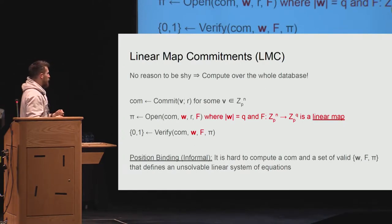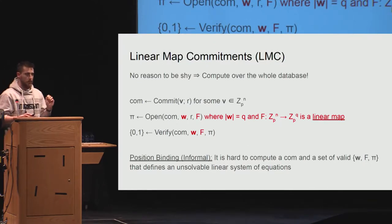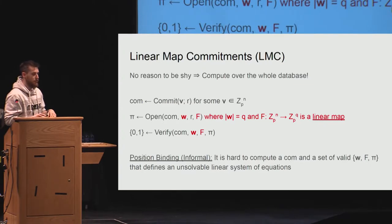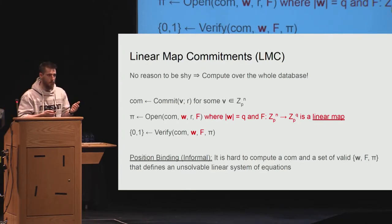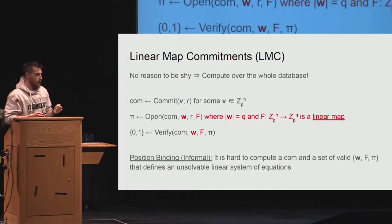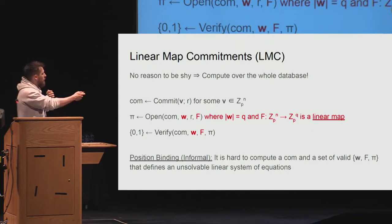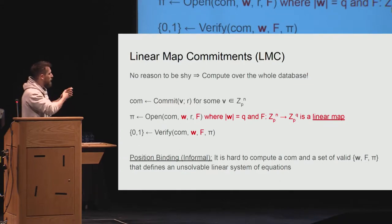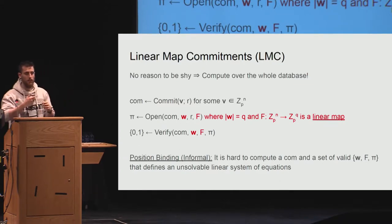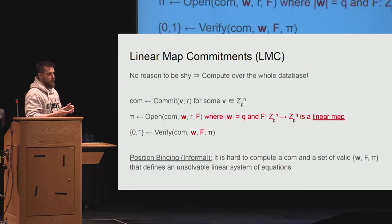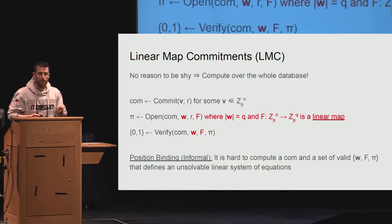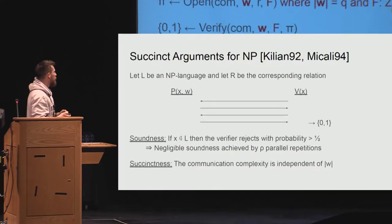The position binding for linear map commitments gets a bit tricky because you have several relations. Intuitively, if you think of the database as a set of unknowns, then each opening together with the proof defines a set of linear equations. We want it to be hard to find a set of linear equations which does not have a solution, even if you use many openings.